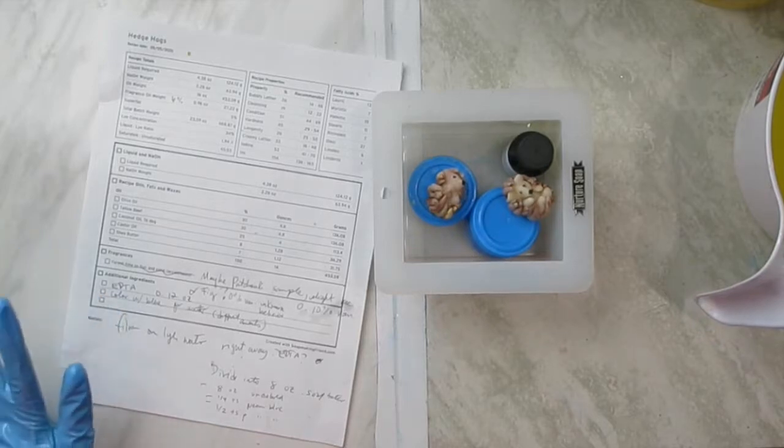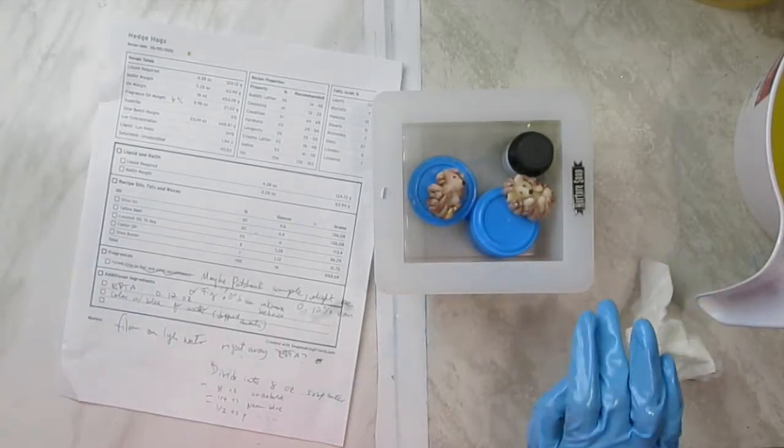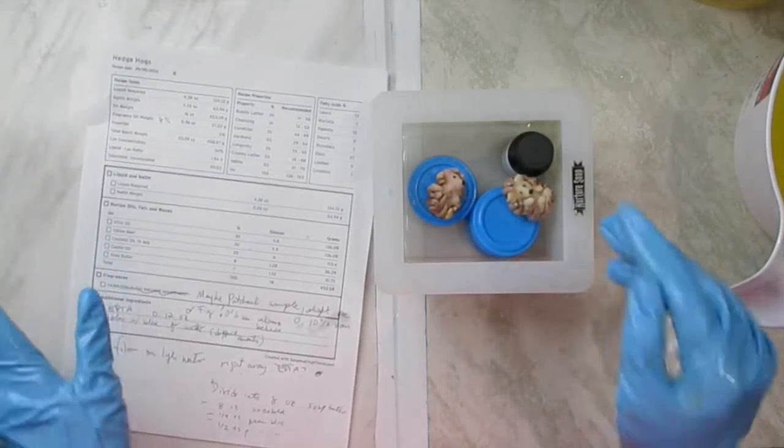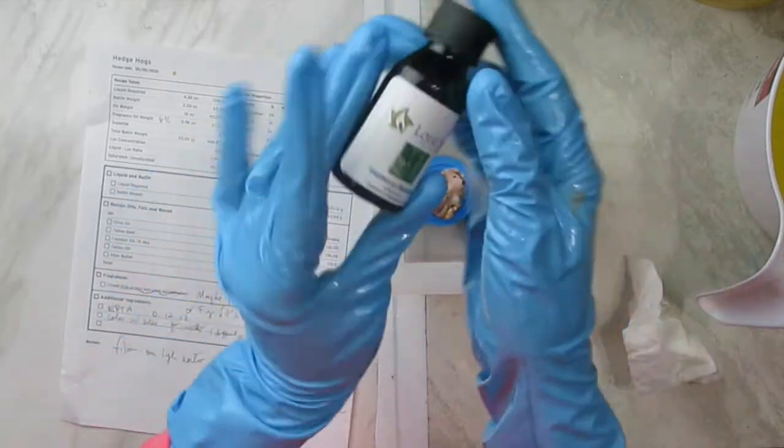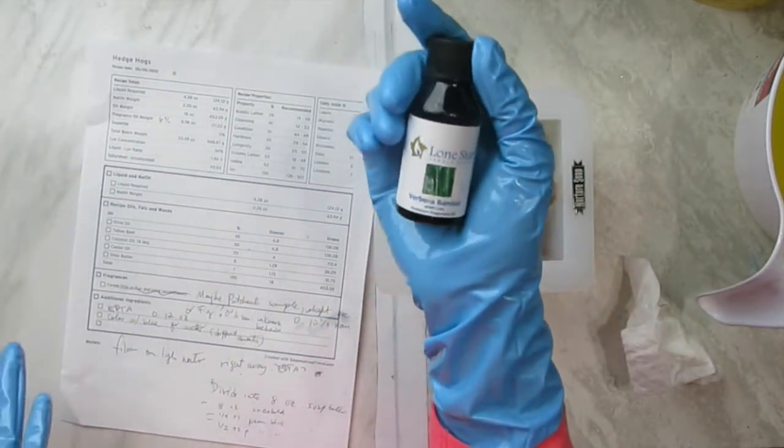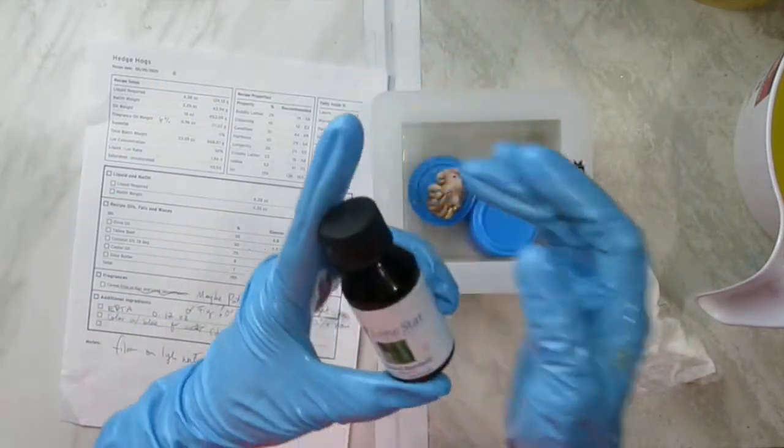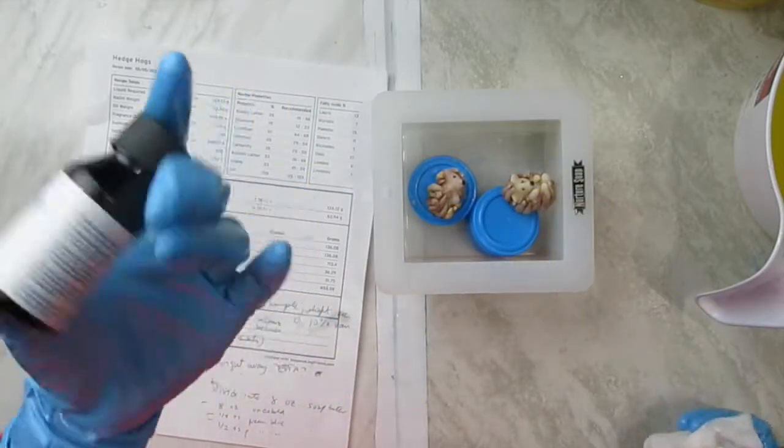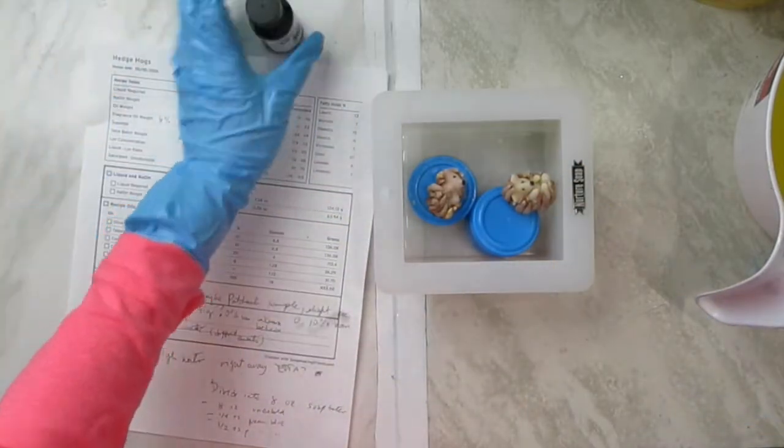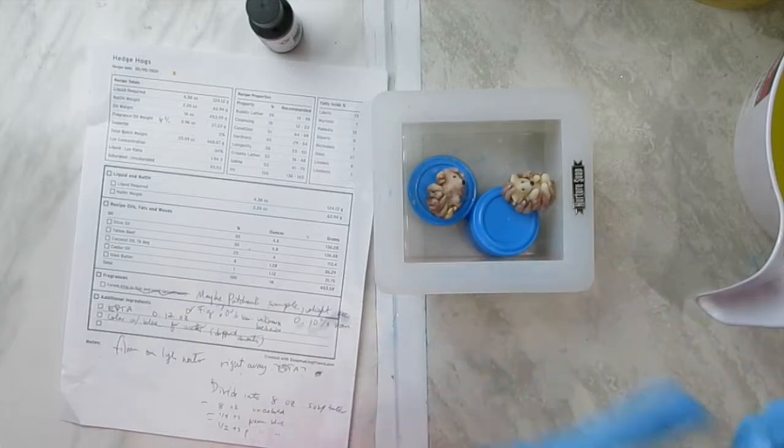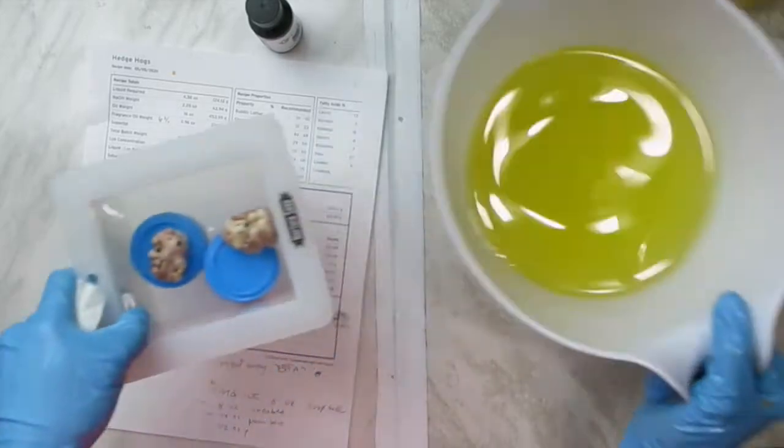Hi, this is Glenda and tonight I will be making a small soap. I want to test this fragrance sample that I bought. It is Verbena Bamboo from Lone Star Candle Supply. It is a one ounce sample which should be enough for one pound of oils which I have right here.